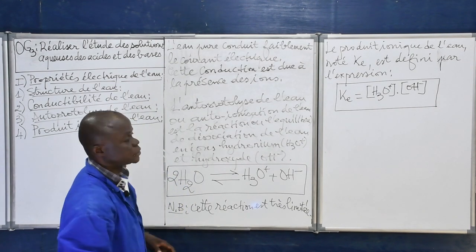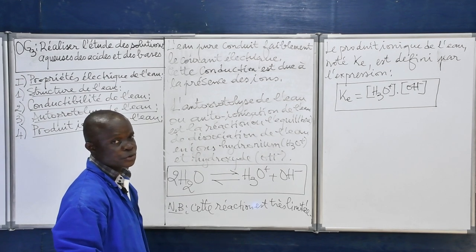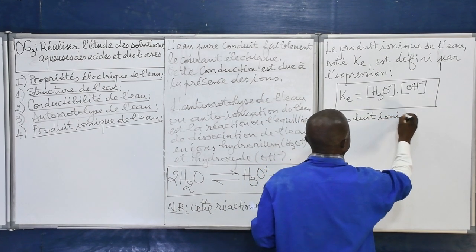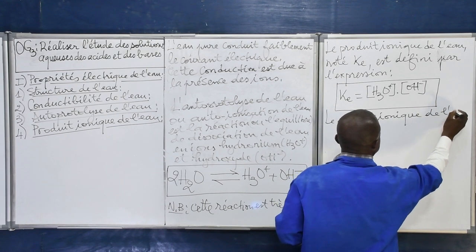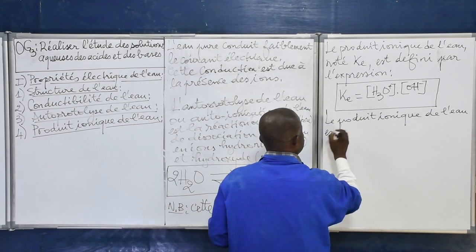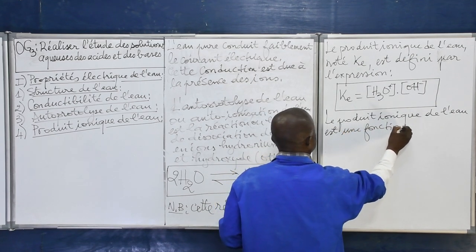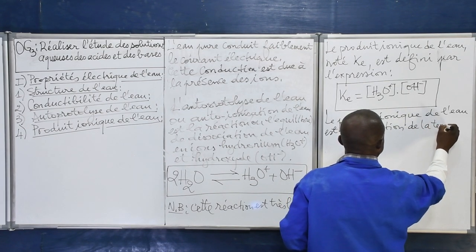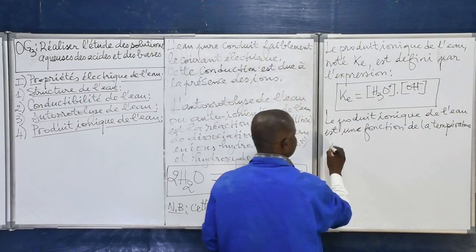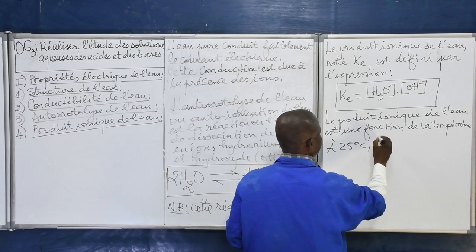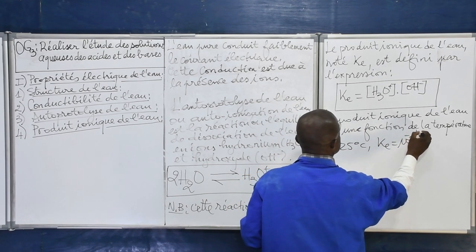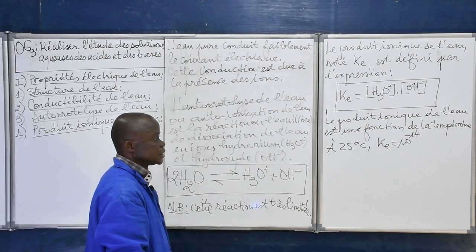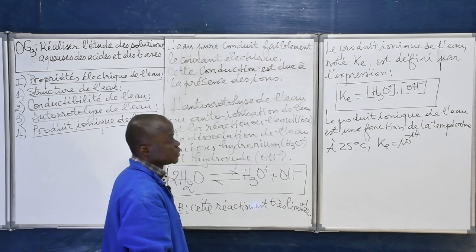Le produit ionique de l'eau est une constante à une température donnée. Le produit ionique de l'eau dépend de la température ; c'est une fonction de la température. À 25°C, Ke = 10⁻¹⁴. C'est la température du laboratoire.